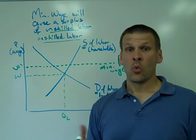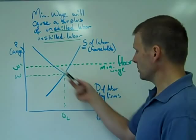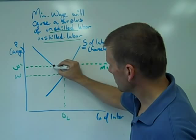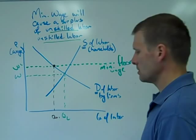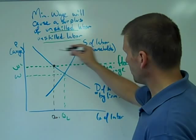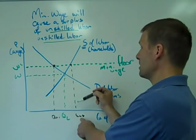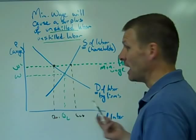What is the impact on the market? That artificially now high price for unskilled labor intersects our demand for labor at this point, which I will call QL1. And our artificially high price wage rate for labor intersects our supply of labor here at QL2. What does that mean? At this artificially high wage rate, there are more laborers willing and able to work for that wage rate.